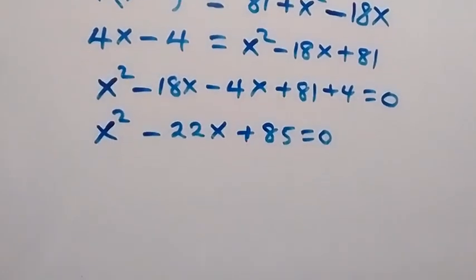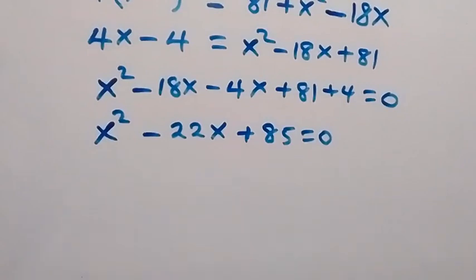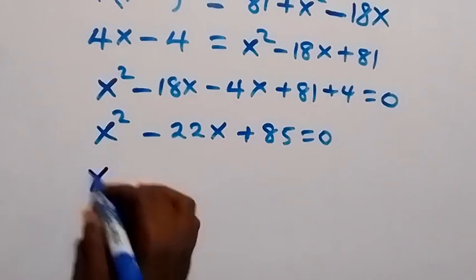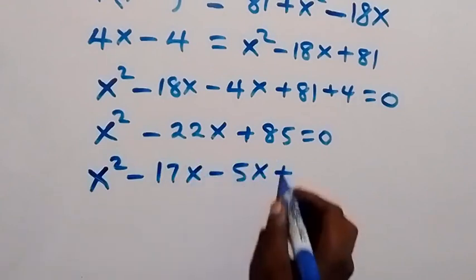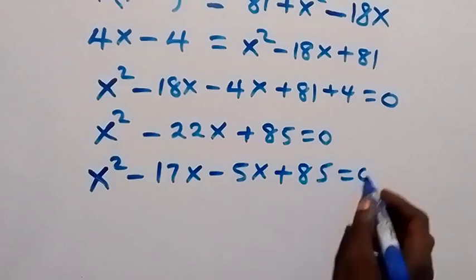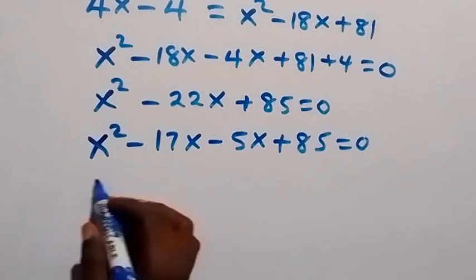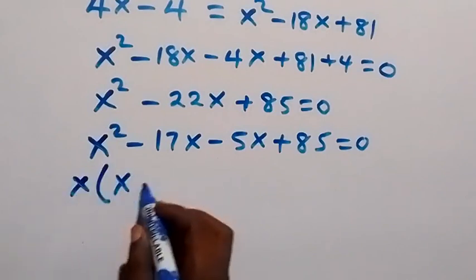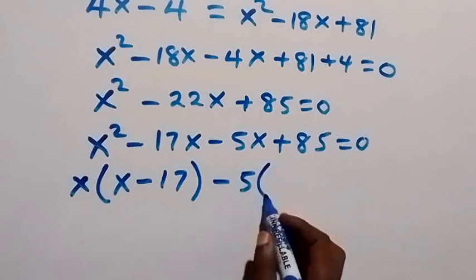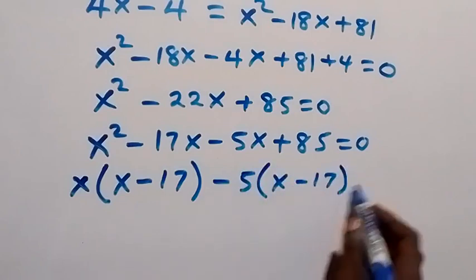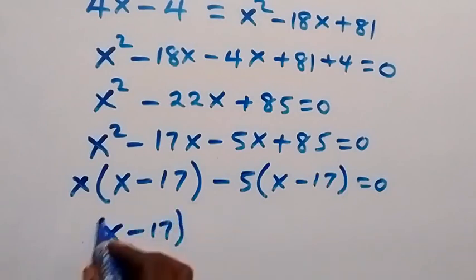We can factorize this. The two factors of 85 that add up to minus 22 are minus 17 and minus 5. So we split the middle term: x squared minus 17x minus 5x plus 85 equals 0. Grouping: x is common in the first pair giving x(x minus 17), and minus 5 is common in the second pair giving minus 5(x minus 17).